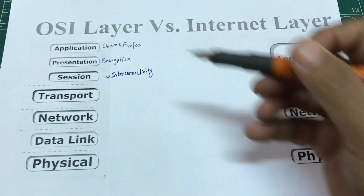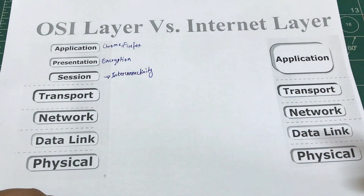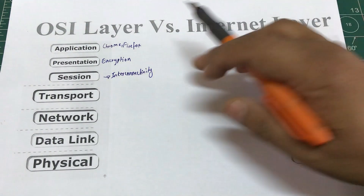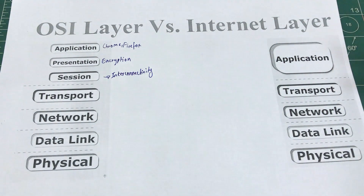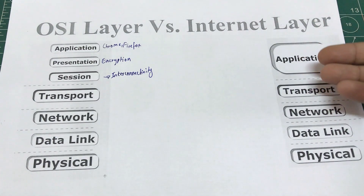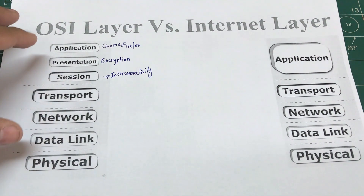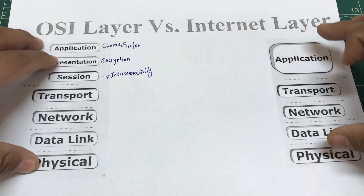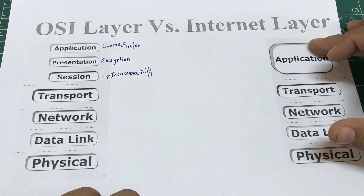The remaining layers are transport, network, data link, and physical. In the Internet layer model, the top three OSI layers — application, presentation, and session — are combined into one application layer. Now let's look at some of the protocols that underlie application, transport, network, data link, and physical layers, which are valid for both the OSI and Internet layer models.